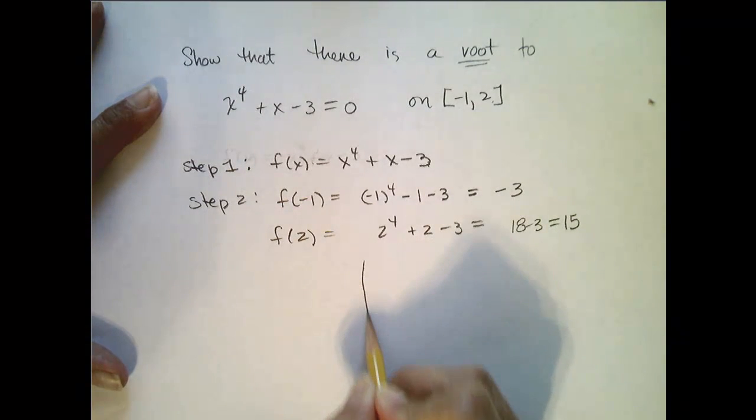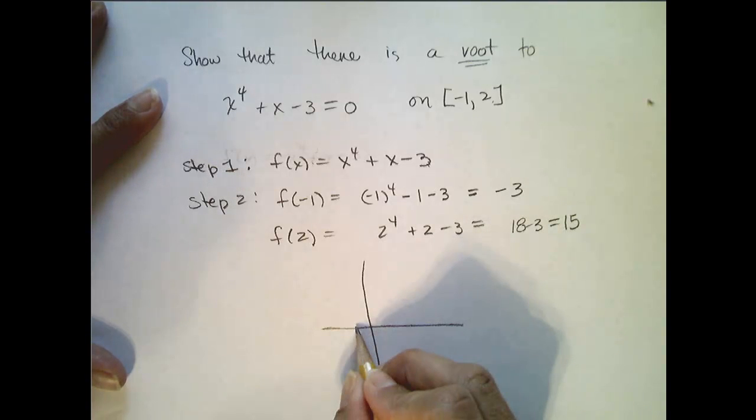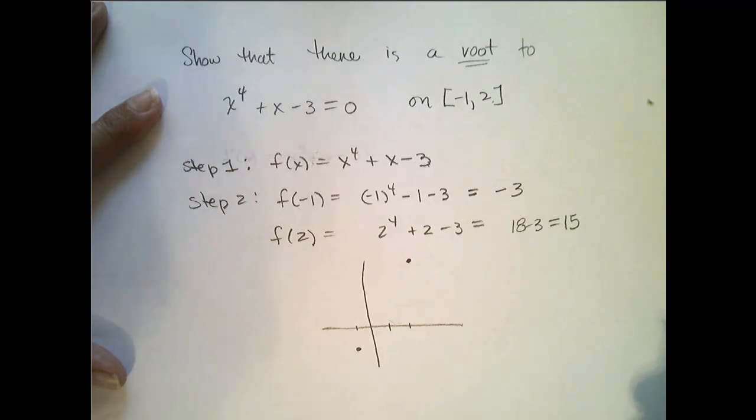Now, if I were to just plot these points on the graph, so negative 1 goes to negative 3, and 2, we'll put 2 over here, goes up here to 15.